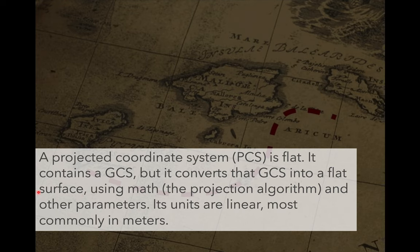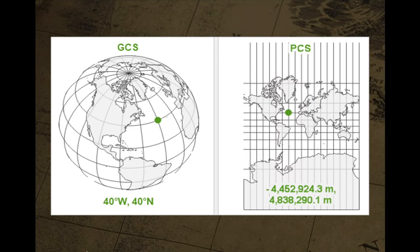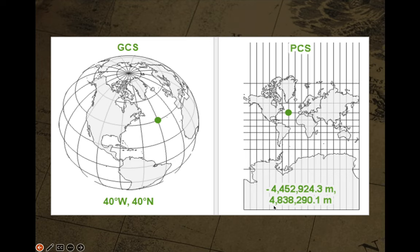A projected coordinate system is the transformation of that three-dimensional spherical space to a two-dimensional flat surface. Our projected coordinate system also contains that geographic coordinate system, which is transformed using some sort of mathematical projection algorithm into a two-dimensional surface. The geographic coordinate system depicts a space on the three-dimensional spherical globe using angle, while in the projected coordinate system that is transformed to a two-dimensional space depicted in meters — meters west of the prime meridian, meters north of the equator.